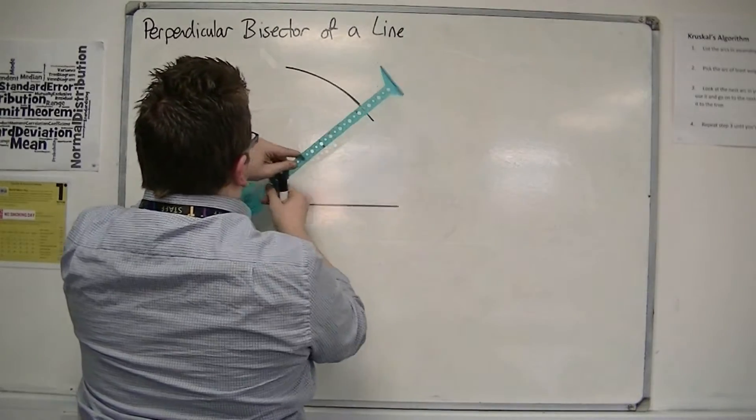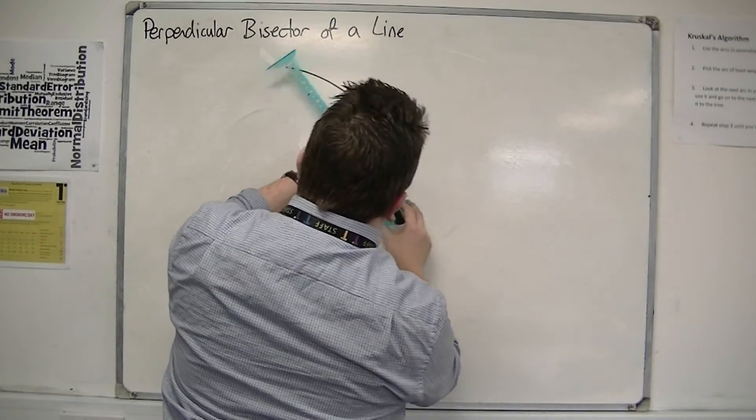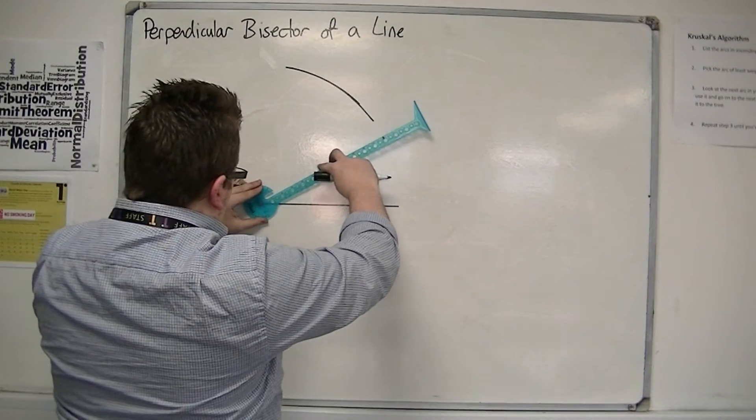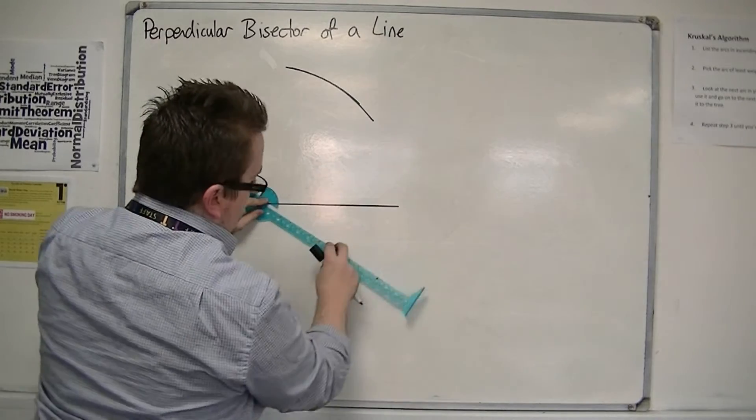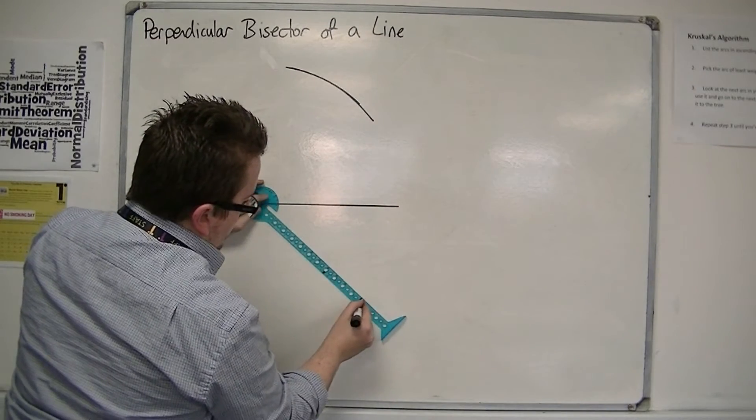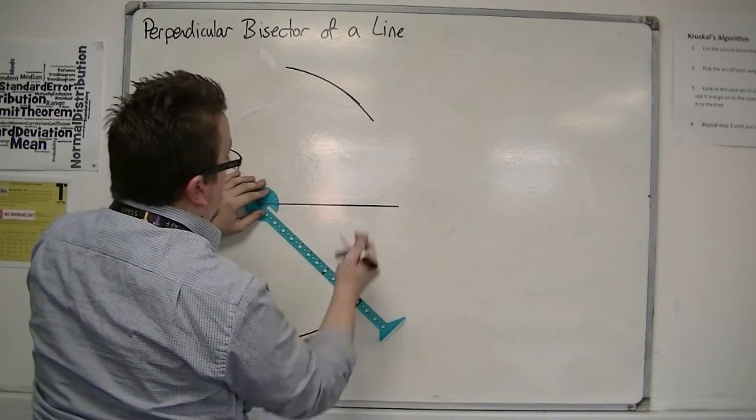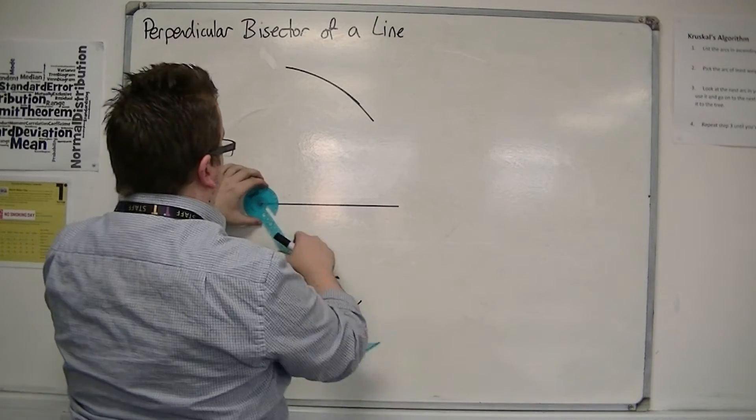Keep the compasses at the same length. I really should have gone down as well. Put your compass point back on that point and also make an arc below. One arc above the line, one below the line.